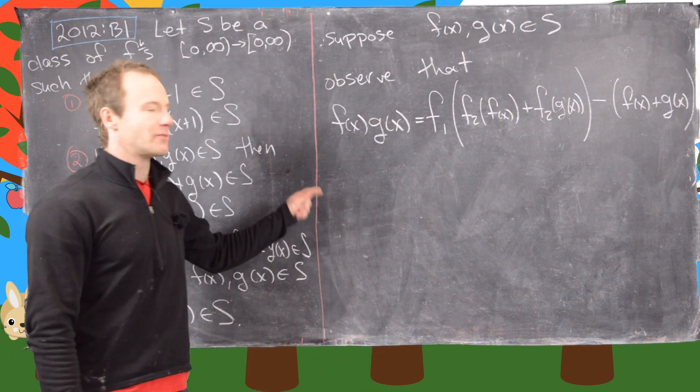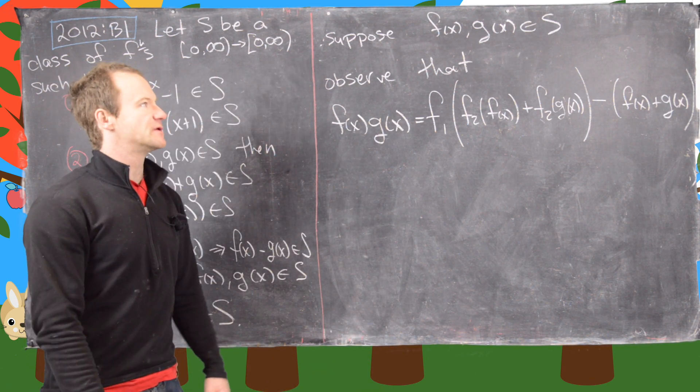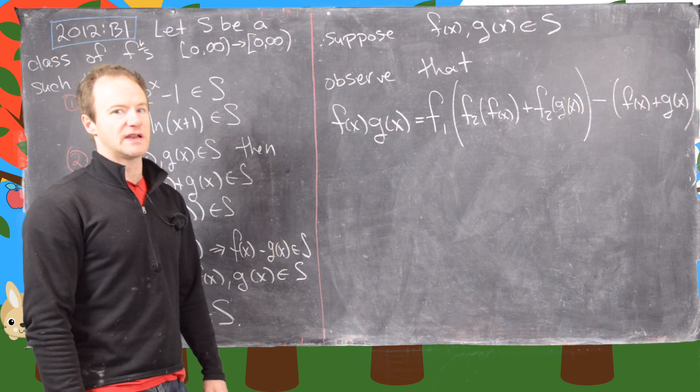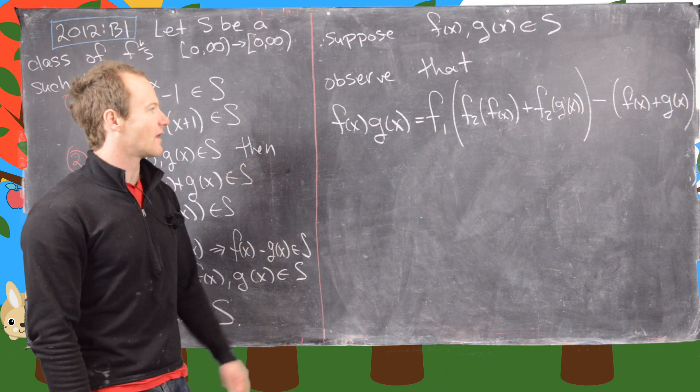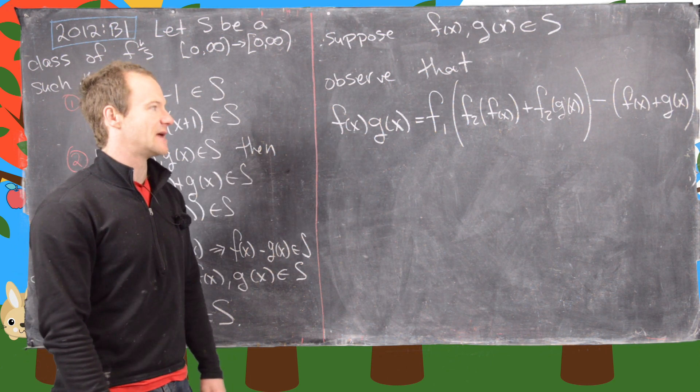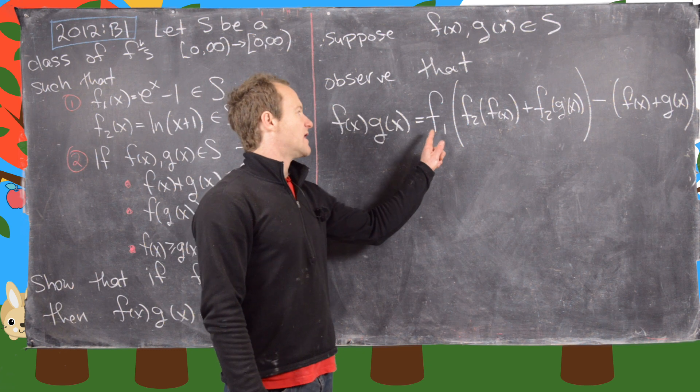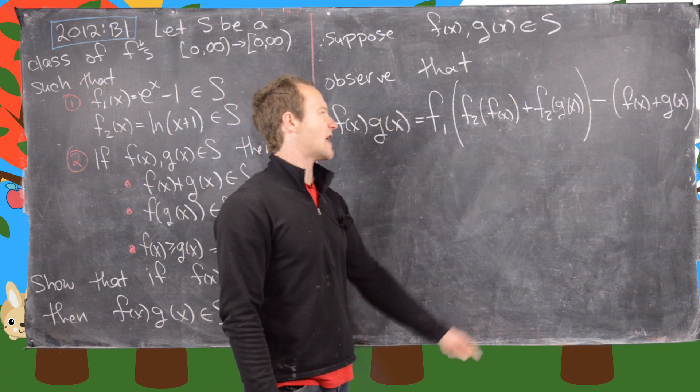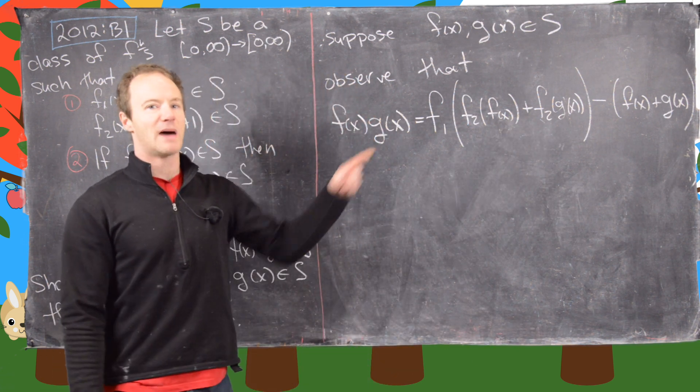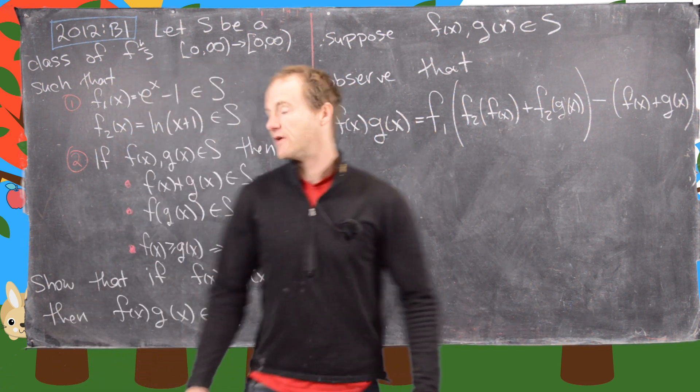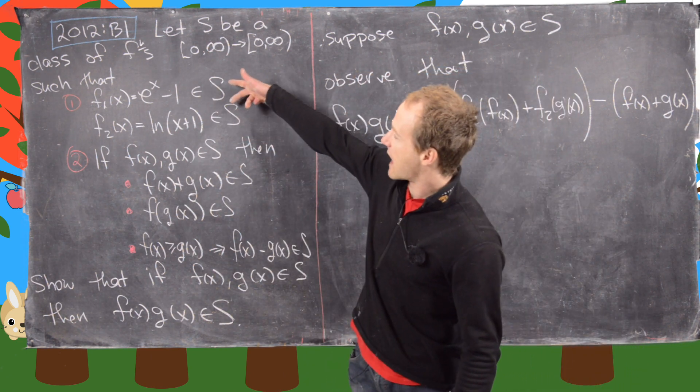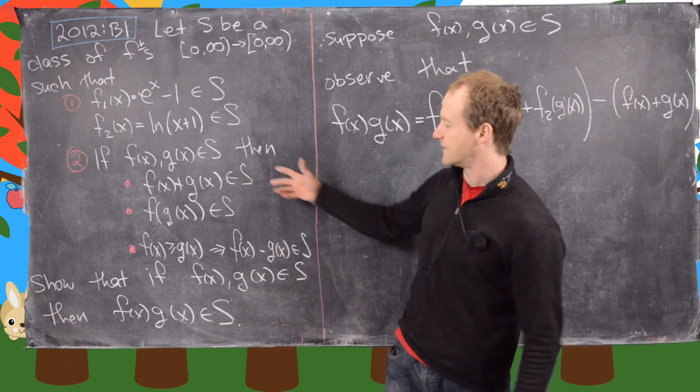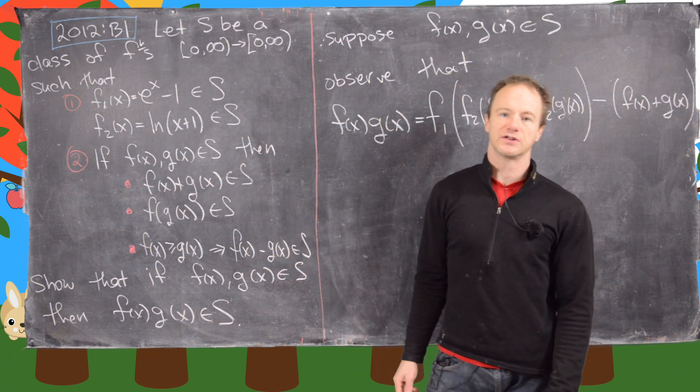So just as a summary of what we just did, if we suppose that f and g are in S, notice that we can put all of those steps that we did on the last board together into one line which says that the product f times g equals the function f1 composed with the function f2 of f of x plus f2 of g of x minus the sum of f and g of x. And that's given that f1 and f2 are these, and we know that this quantity on the right hand side is inside the set S because of all of this stuff from part two.